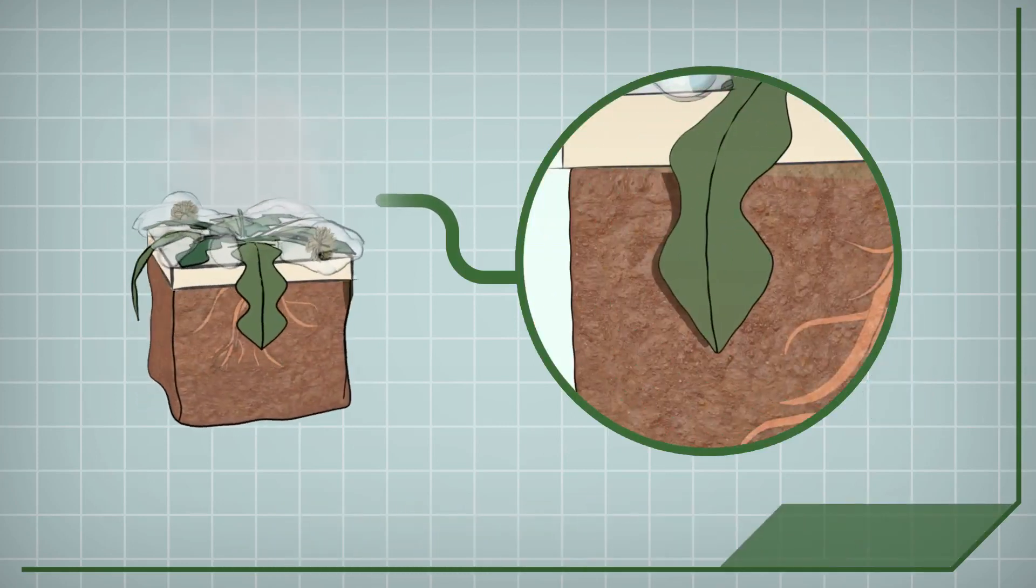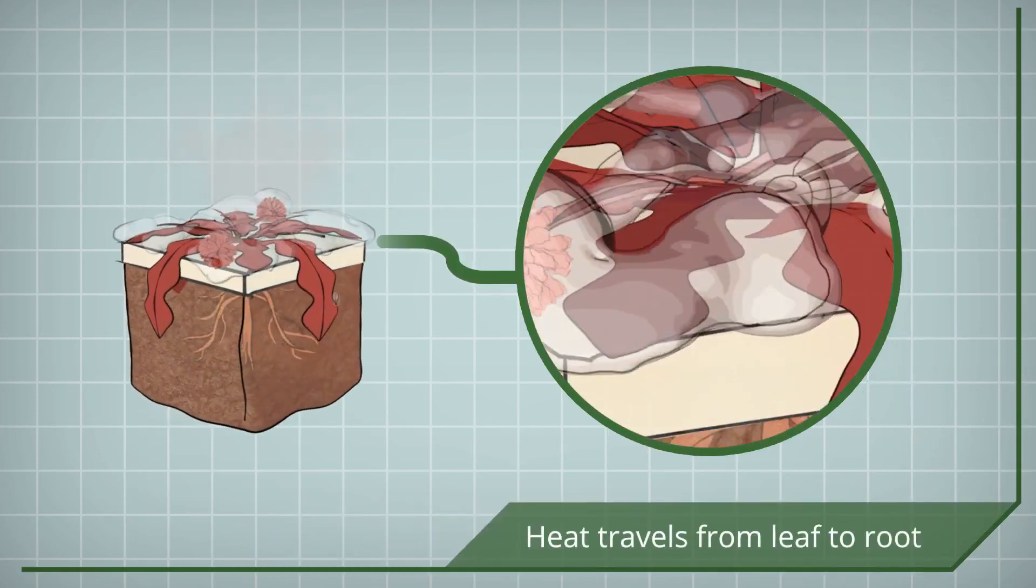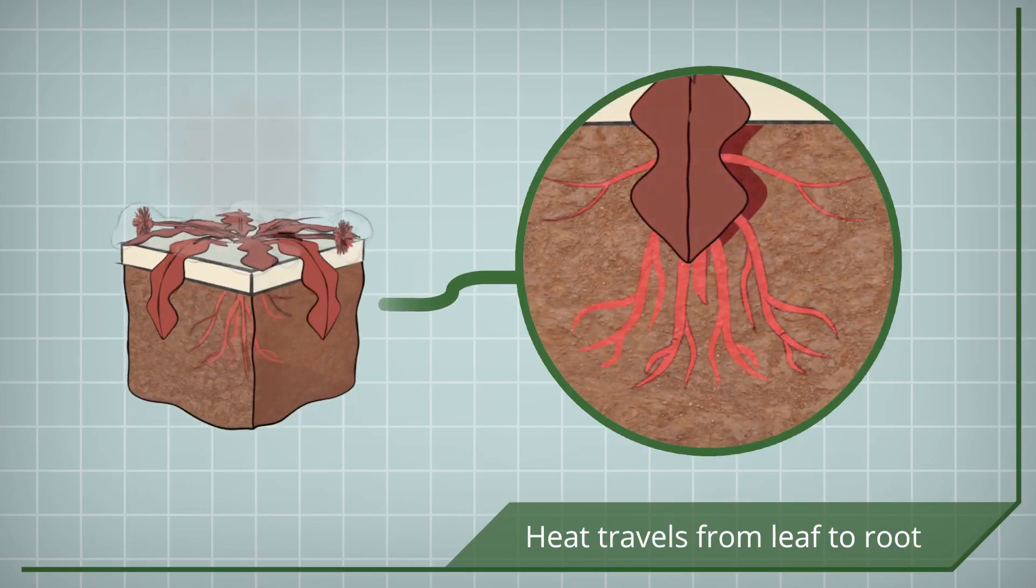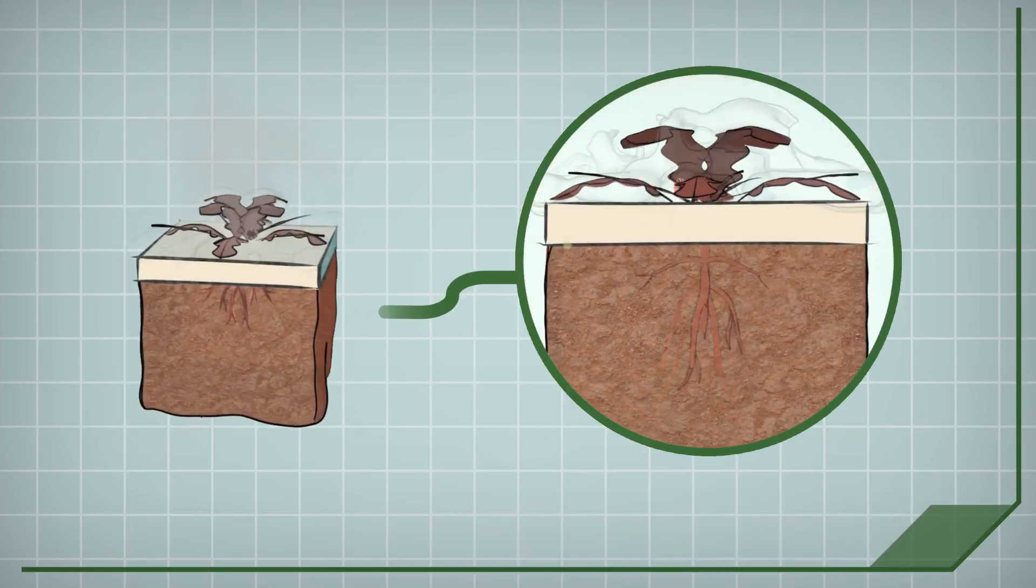The heat penetrates the plant's waxy outer leaf layer, travels down the stem and into the root structure, cooking the plant, causing it to die or to be severely damaged.